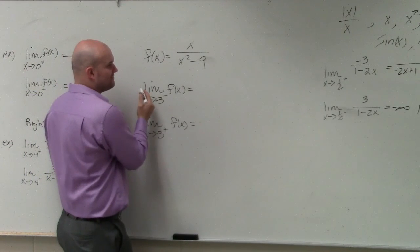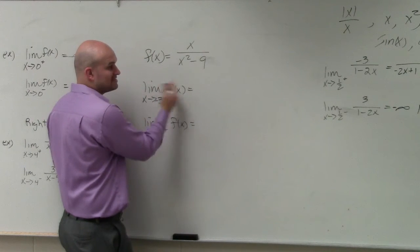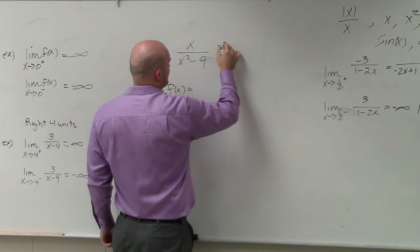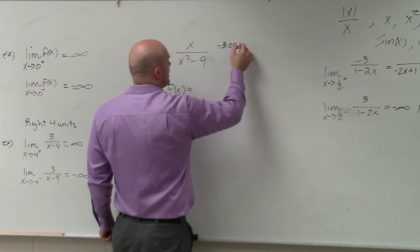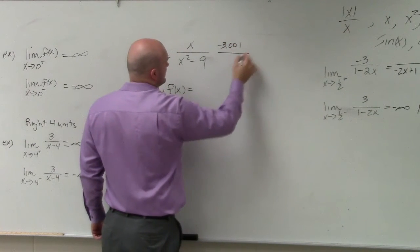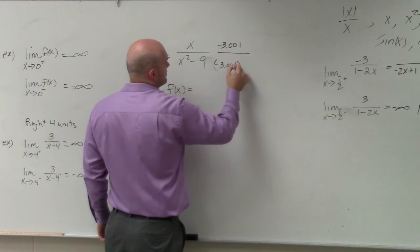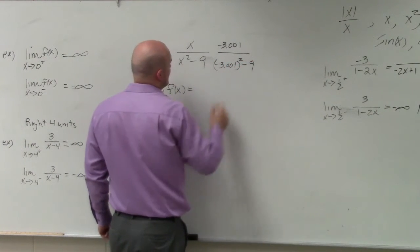So from the left-hand side, we need to pick a value that's more negative than negative 3. So if I plugged in negative 3.001, and then negative 3.001 squared minus 9.